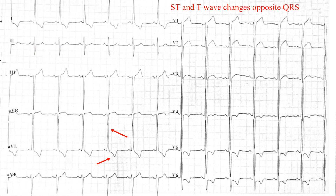For the ST and T wave changes parameter, the changes should be opposite in polarity to the QRS. We can see that the QRS is positive while the T waves are negative, and this pattern can be seen in many other leads as well. This confirms that opposite ST and T wave changes are present, so this criteria is fulfilled.